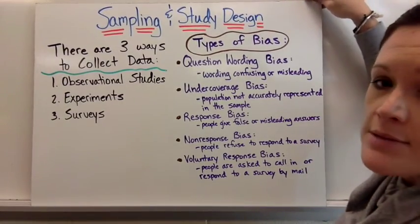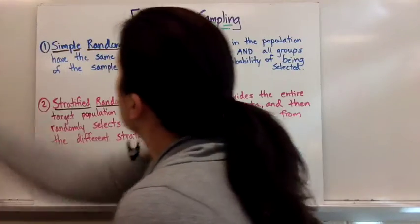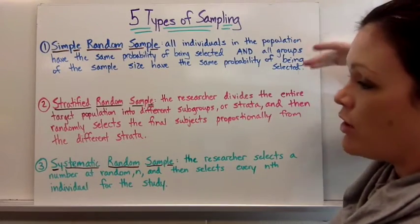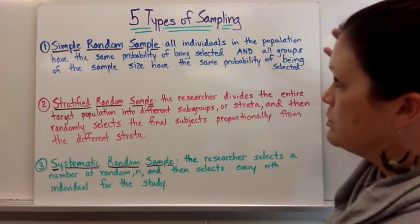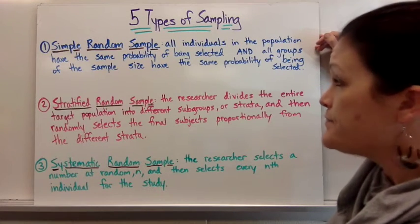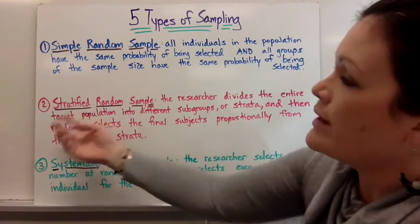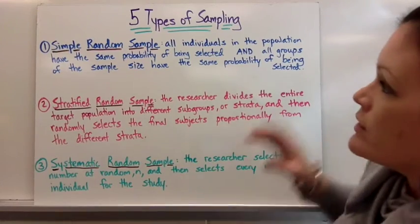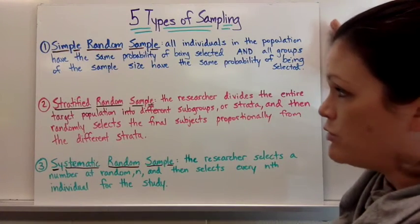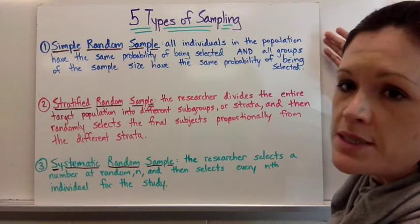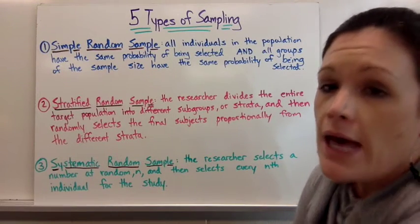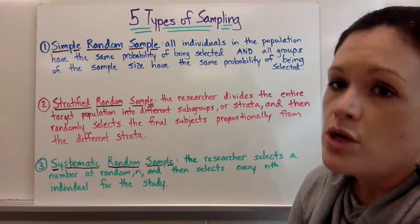Now let's look at the five types of sampling. A simple random sample is the overarching idea behind all five types. It's when all individuals in the population have the same probability of being selected, and all groups of the sample size have the same probability of being selected. For example, we could take all students at Holly Springs High School, put them in a big hat, and draw out some names — everyone had an equal chance of being chosen.